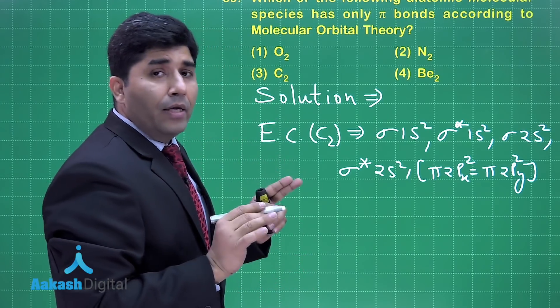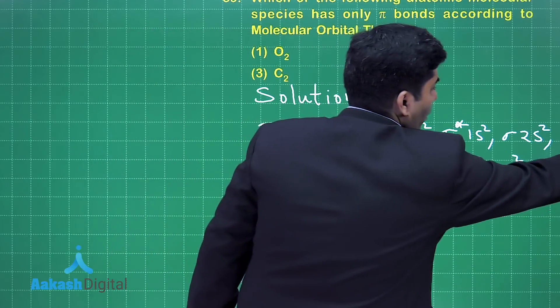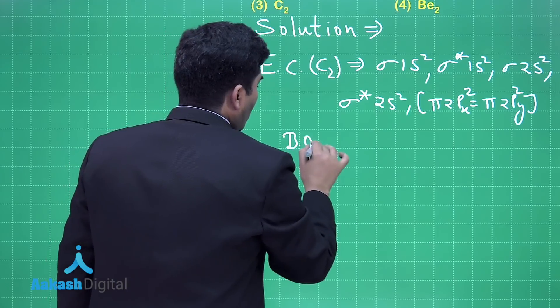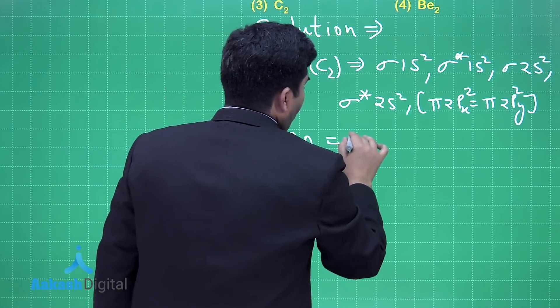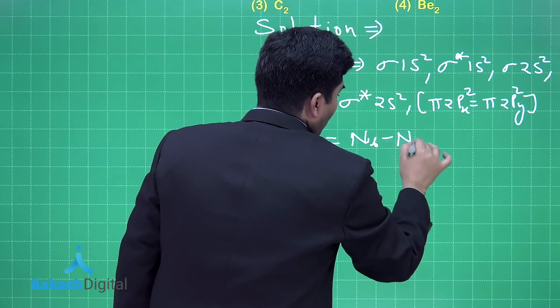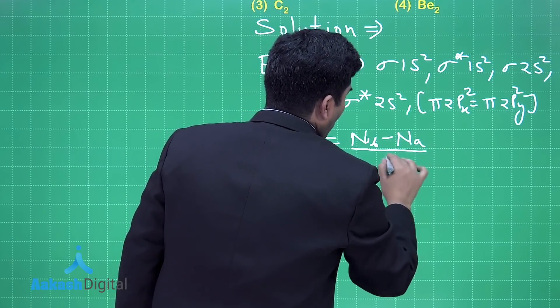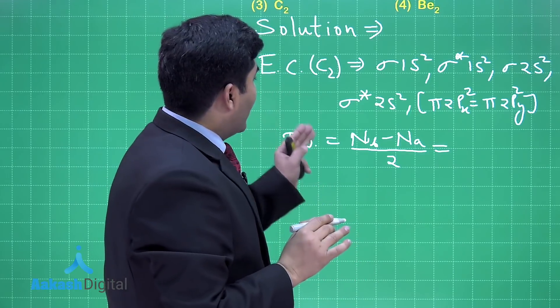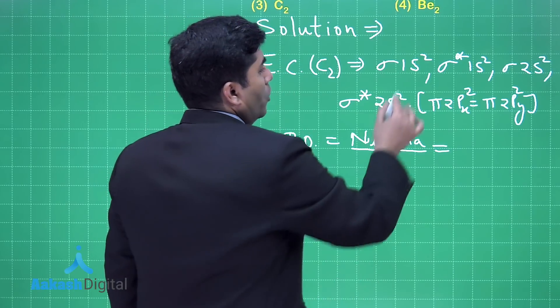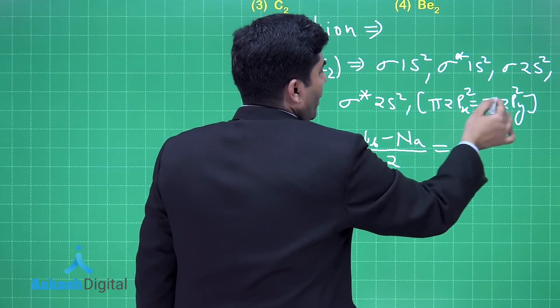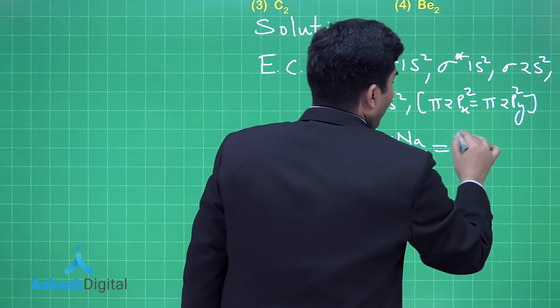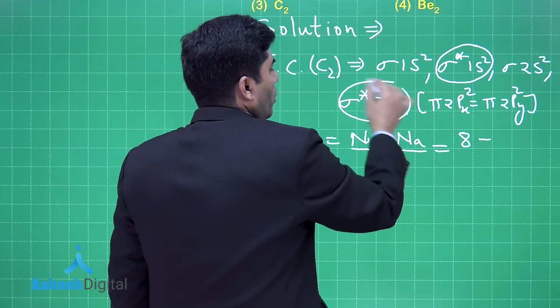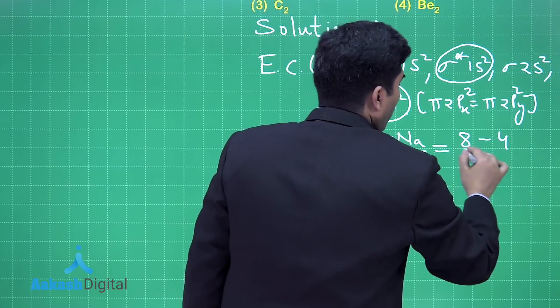The bond order can be found by the formula: (number of electrons in bonding orbitals minus anti-bonding orbitals) divided by 2. The bonding electrons are 2+2+2+2 = 8, and anti-bonding electrons are 2+2 = 4.